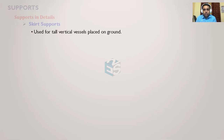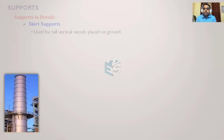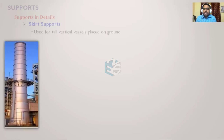Skirt supports are also provided for vertical vessels when the vessel is supposed to be mounted on grade — meaning on the ground — with a foundation. Self-supported vessels will have this type of support.